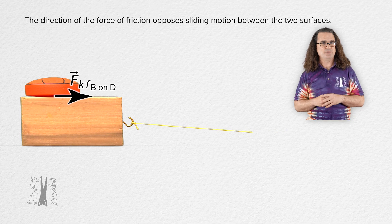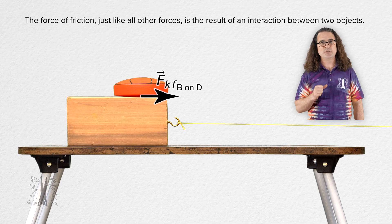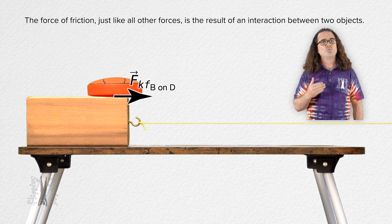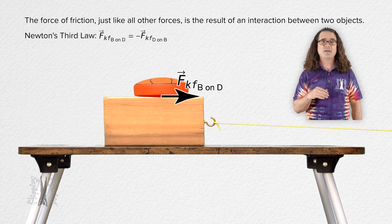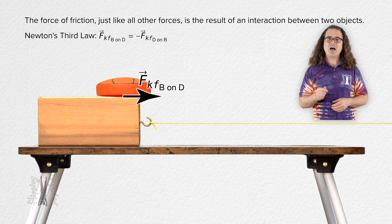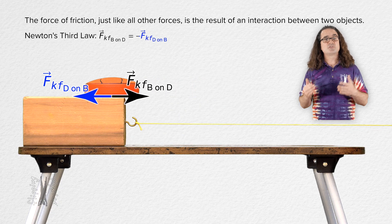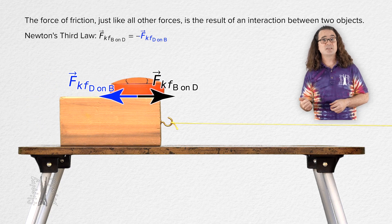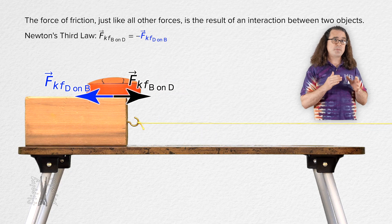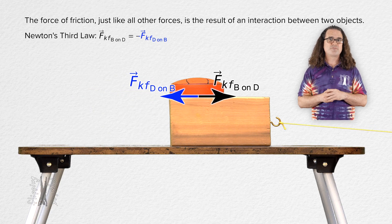I do have one more thing I want to point out. The force of friction, just like all other forces, is the result of an interaction between two objects. So far we have only looked at the force of friction from the block on the disk. Realize that in each instance there is always, according to Newton's third law, an equal but opposite force of friction acting from the disk on the block. For example, when the block is sliding to the right, the force of kinetic friction from the block on the disk is to the right. There is also, simultaneously, a force of kinetic friction from the disk on the block which is to the left. Newton's third law: the force of kinetic friction from the block on the disk is equal in magnitude but opposite in direction to the force of kinetic friction from the disk on the block.